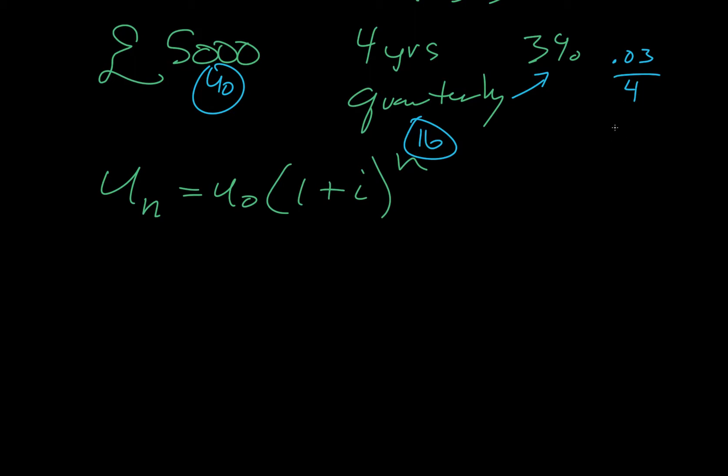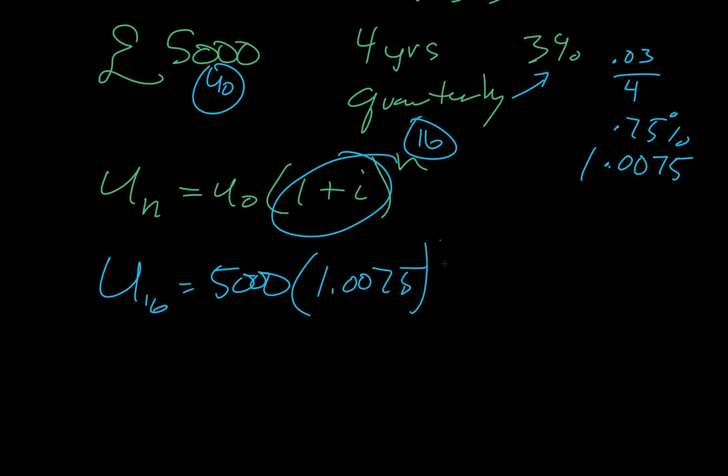Which, if we do that, it's 0.75%. Which is going to translate into 0.0075 when we plug it in. So this entire thing is going to be 1.0075. Okay. So we'll plug this in. u of 16 equals the initial amount, which is 5,000. 1.0075 raised to the 16.